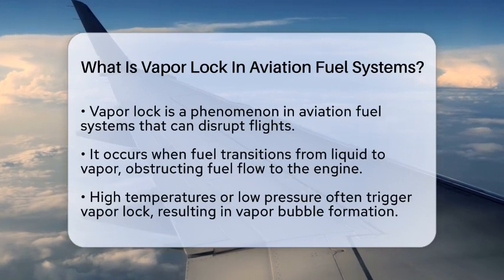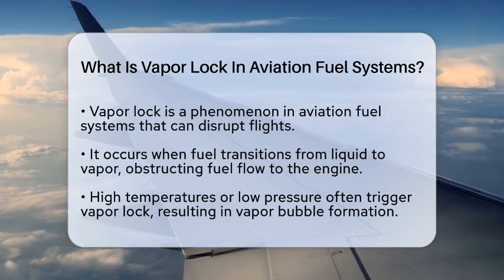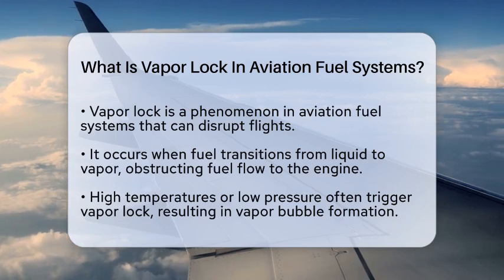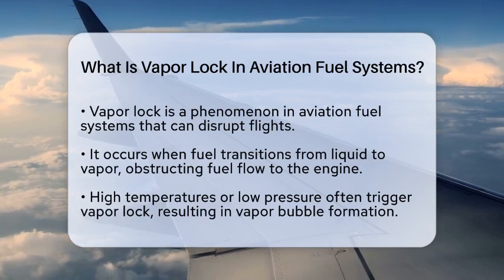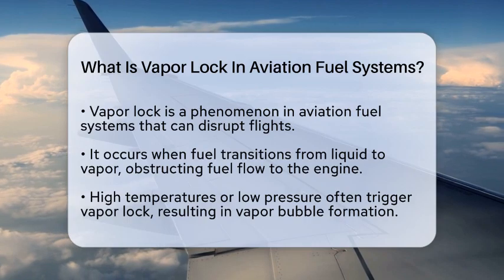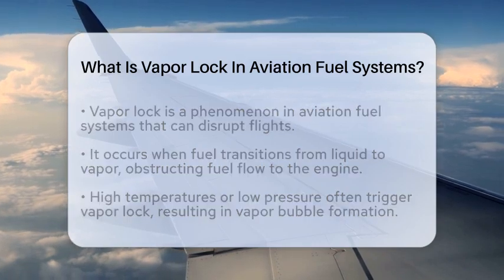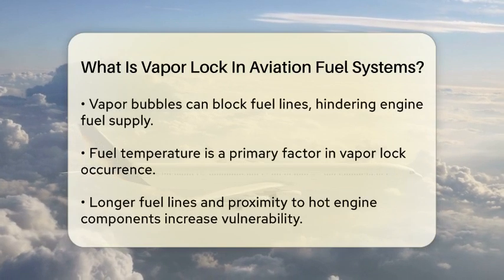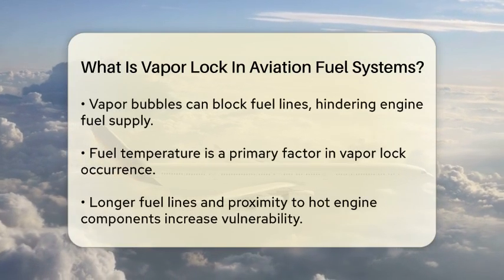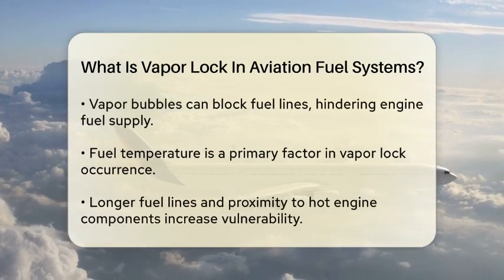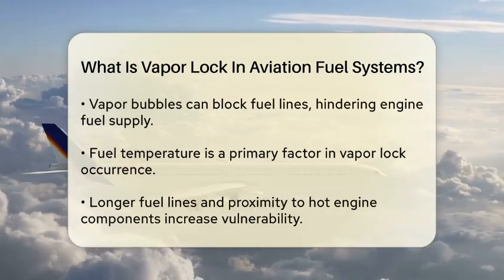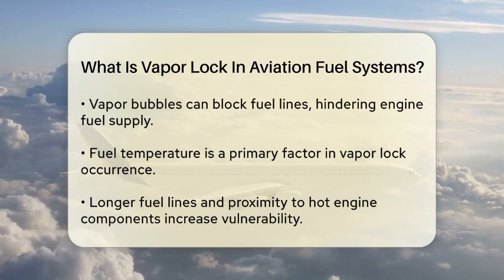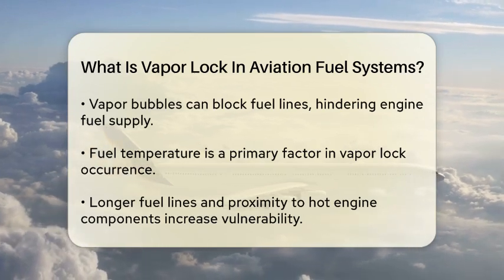Vaporlock happens when fuel in the system changes from a liquid state to a vapor state, which can obstruct the flow of fuel to the engine. This change typically occurs due to high temperatures or low pressure, which can lead to the formation of vapor bubbles. When these bubbles form, they can block the fuel lines, making it difficult for the engine to receive the necessary fuel for operation.